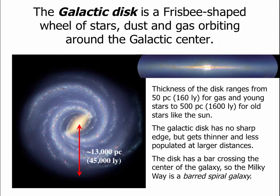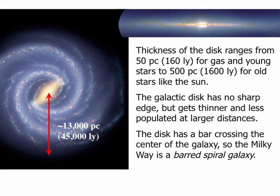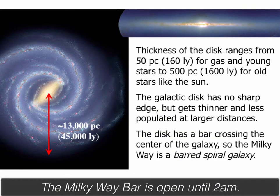The disk is this frisbee-shape or pancake-shape wheel of stars that orbits around the galactic center. For stars like the Sun, it's 1,600 light years thick, which sounds thick, but remember we are 26,000 light years away, so it's really very flat like a pancake. There's no sharp edge to the disk — it sort of peters out at its outer region. Also, near the galactic center there's this slanted feature on the artist's rendition called the bar of the galaxy. Our galaxy has both spiral arms and a bar, so we call the Milky Way a barred spiral galaxy.